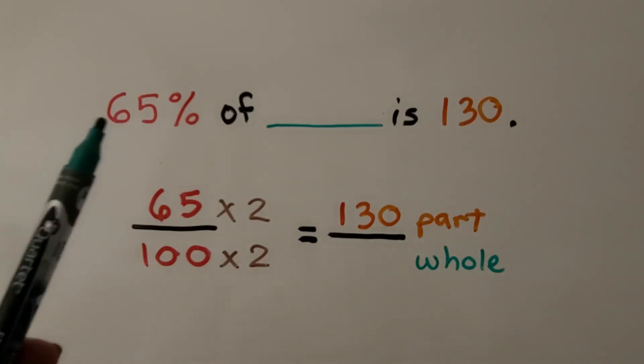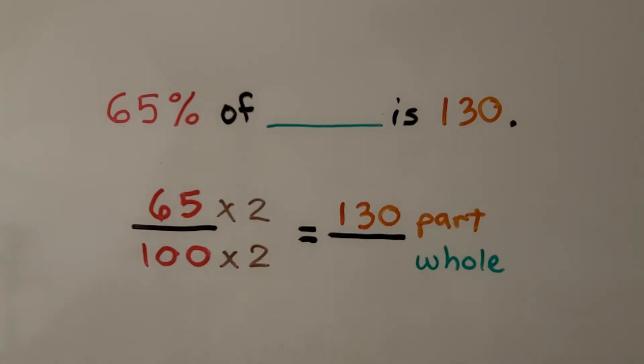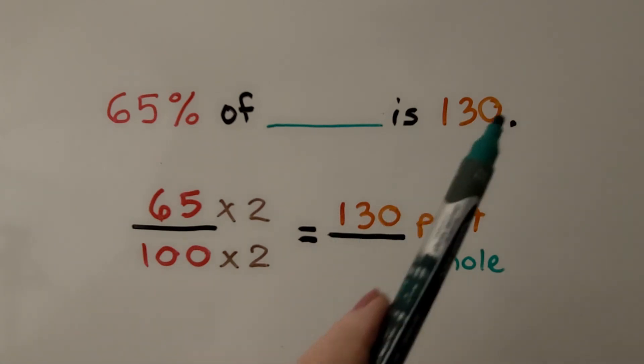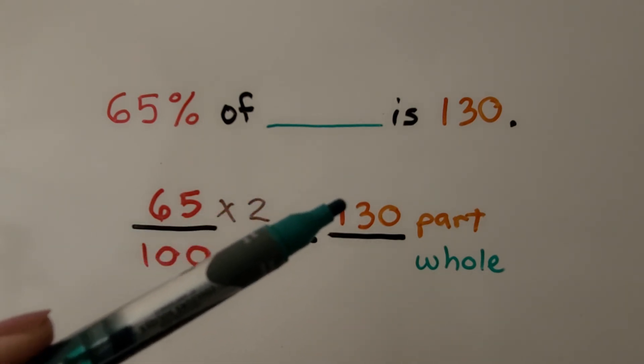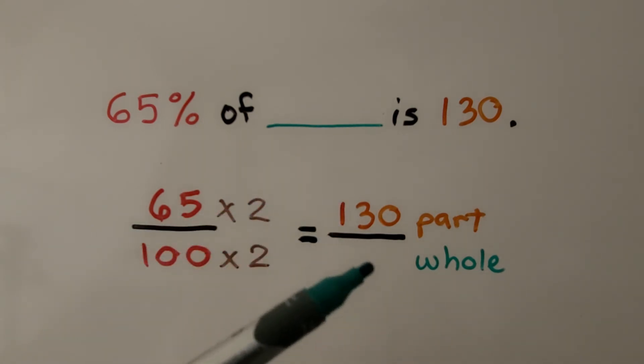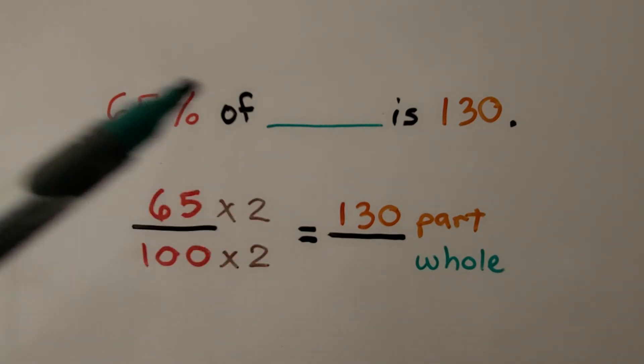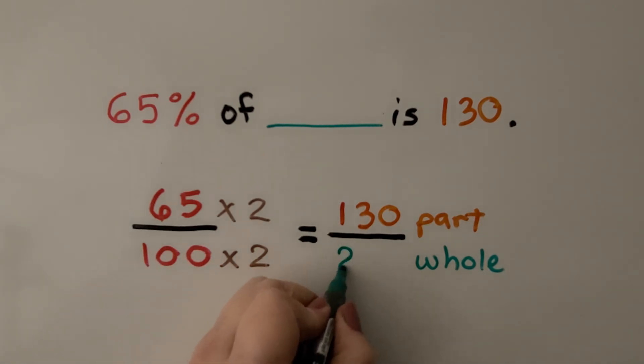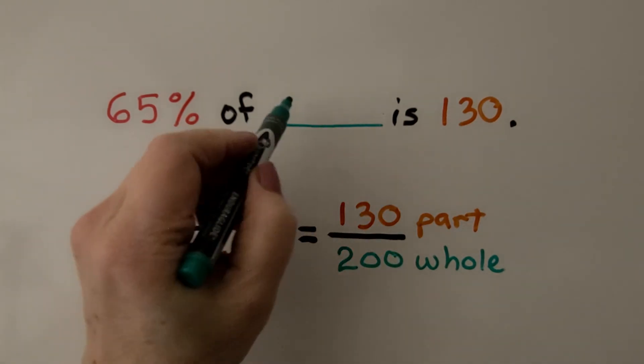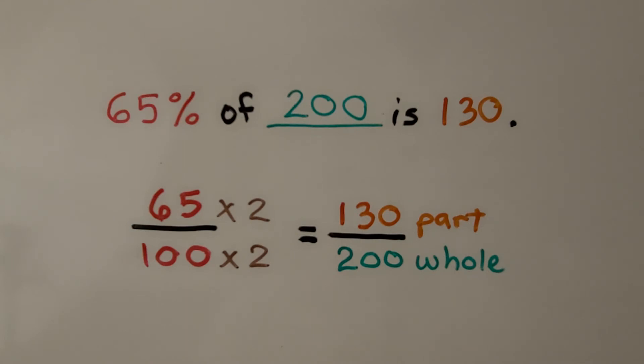Here we have 65% of some amount is 130. We have our percentage. We have our part. We just don't have the whole. We write the percentage as 65 over 100. And we have our part, 130, over whatever the whole is going to be. And we think: 65 times 2 is equal to 130. So we must need to multiply 100 times 2. That's going to give us a 200. We know that that's 200. 65% of 200 is 130.